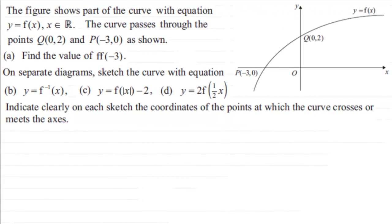Hi, now in this example we've got the figure here that shows part of the curve y equals f of x, and x is valid for any real number. We're told that the curve passes through the points Q at 0, 2 and P at minus 3, 0.